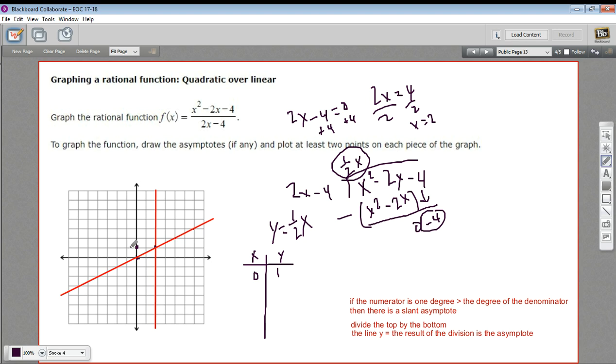Let's try another point over here. Let's try the point x equals 1. So that would be 1 minus 2 is negative 1 minus 4. That's a negative 5. And 2 minus 4 is negative 2. So that's a positive 5 halves. So we've got 1 and 5 halves is 2 and a half.